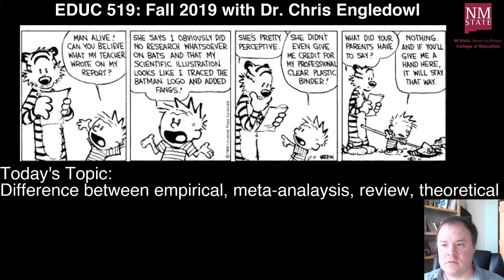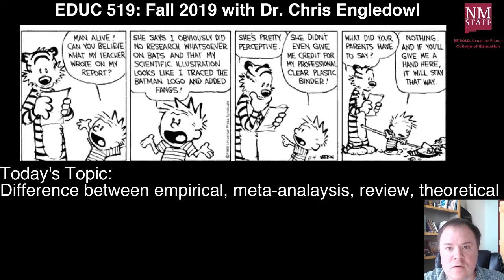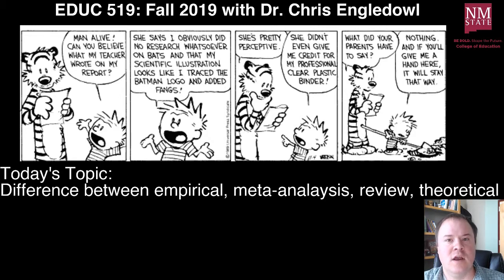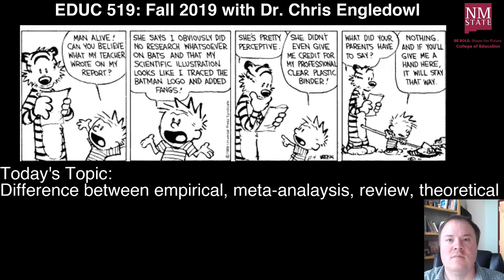Today we're going to talk about these words: empirical, meta-analysis, review, and theoretical. These are words used to describe published literature in the field. When you first start thinking about these words it may be hard to understand the differences between them, especially when there are topics such as people talking about empiricism, which sometimes is related more to post-positivism or positivism. But we're looking at these words in a more broad sense.